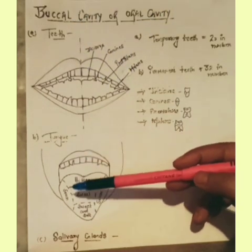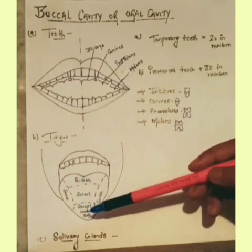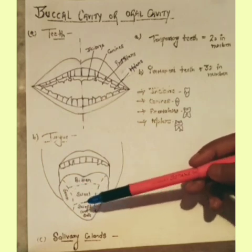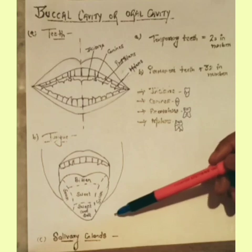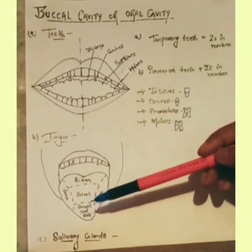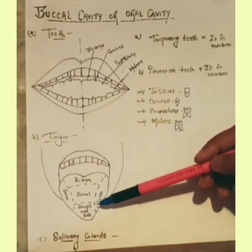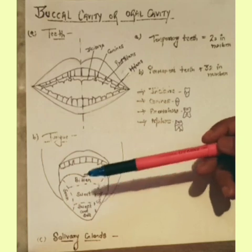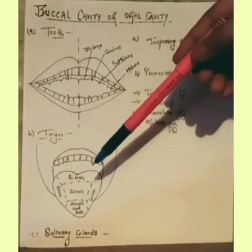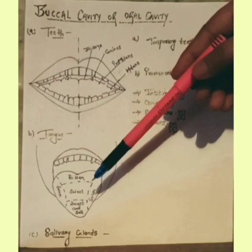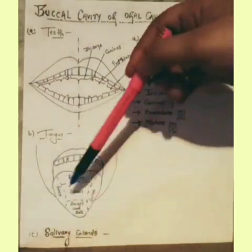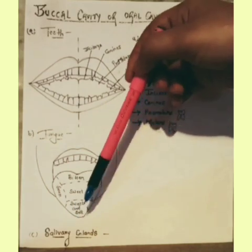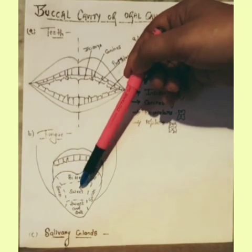The tongue is a fleshy muscular organ attached at the back to the floor of the buccal cavity. It is free at the front and can be moved in all directions. The tongue performs the following functions: it helps in mixing saliva with the food, it helps in pushing and swallowing the food into the food pipe, and it helps in tasting different flavours — salty, sour, bitter, and sweet.